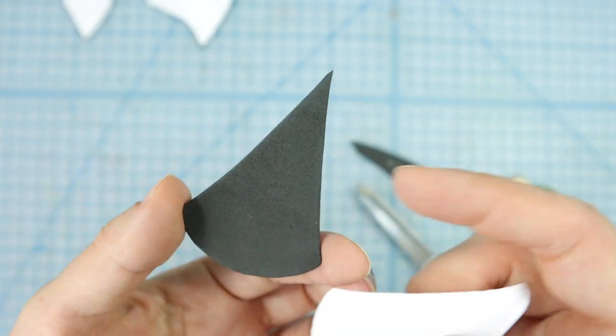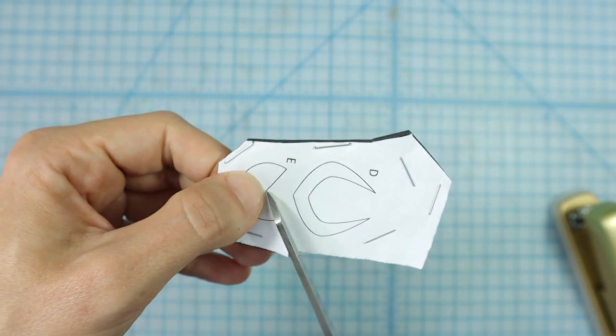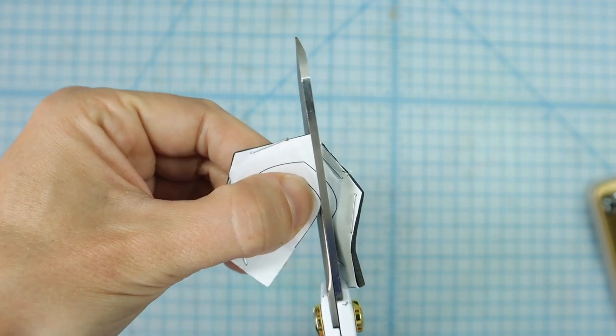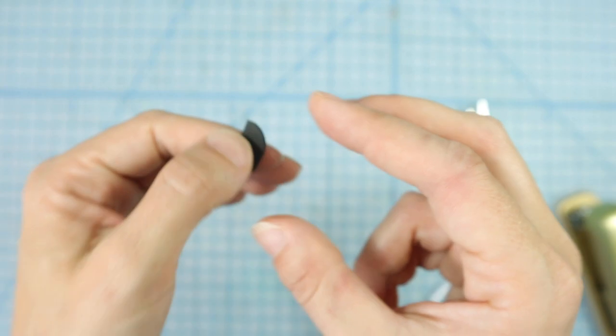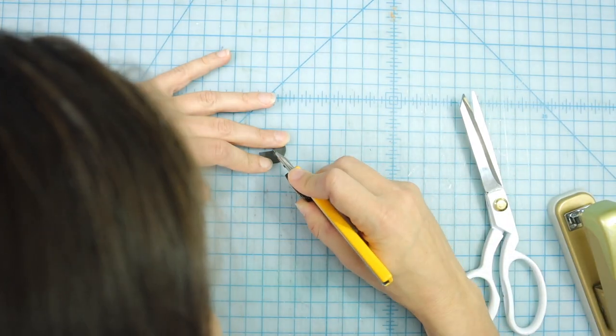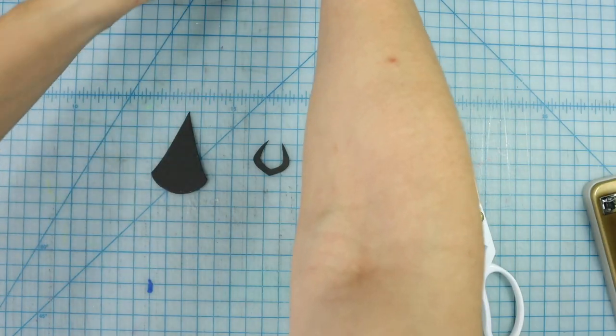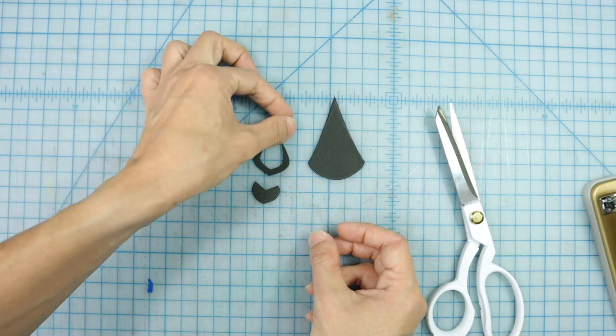So here you can see the difference between the back and the front. And for these tiny pieces, I'm going to try to be as accurate as possible as well. And for this little one, I'm going to add a detail in the center with a blade. And now I'm ready to glue.